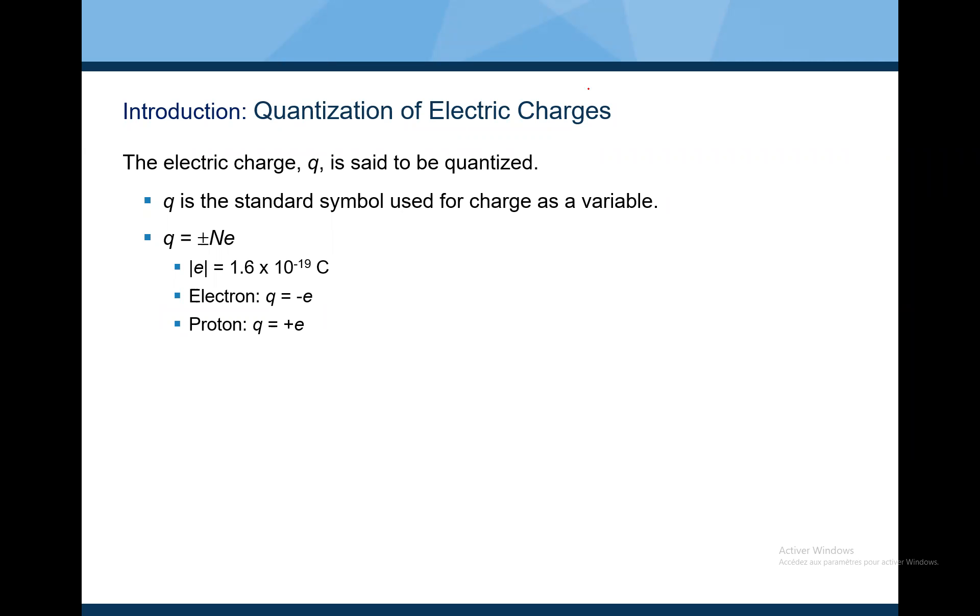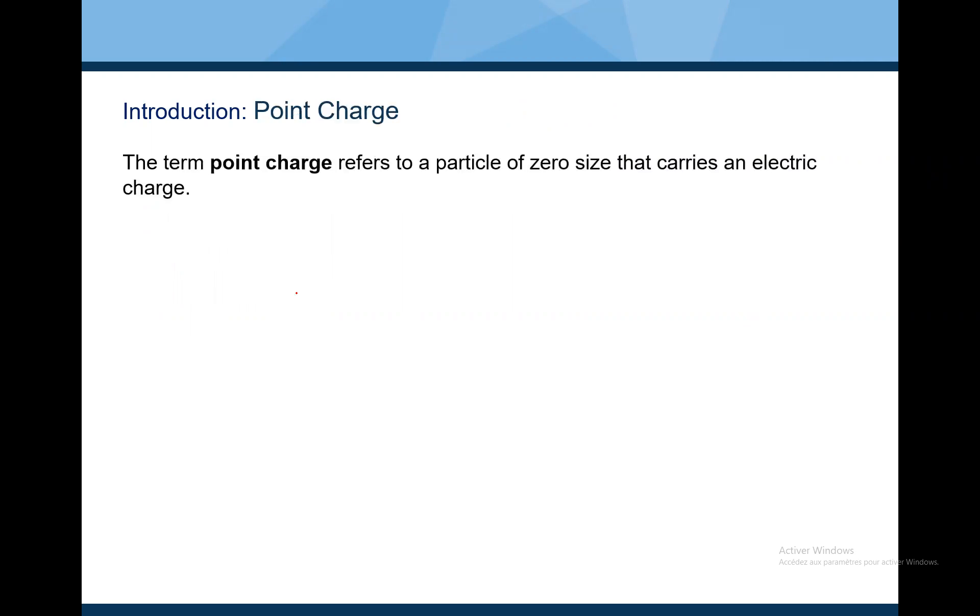Now it's important to know what does it mean the point charge. Or what is the difference between a point charge and another object. If we have an object positively charged and a point A at a position very far, in this case, the distance between this point and any point on the object will be the same.